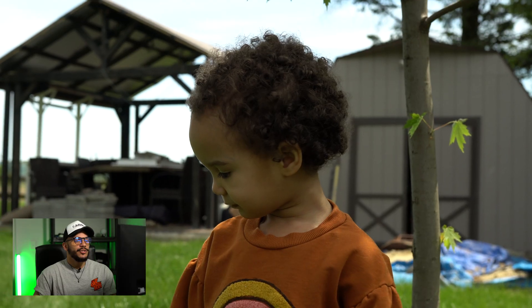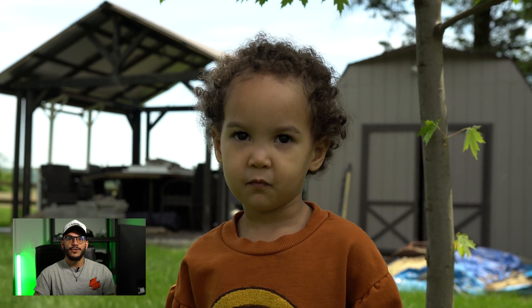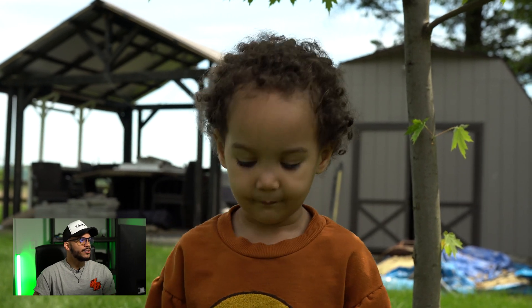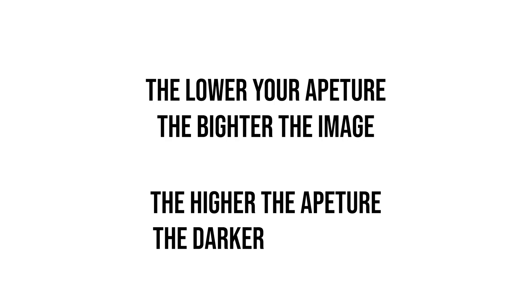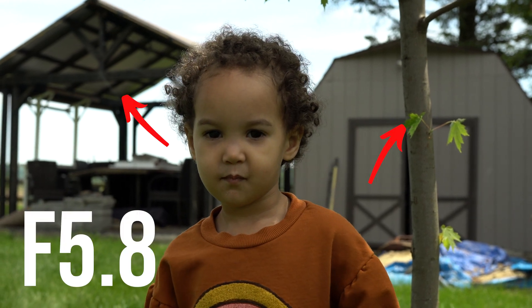Now we have an aperture of 5.8. The image got darker — we have a more closed aperture. As you can see, the tree is now in focus. The barn isn't as focused, but it is not as blurry anymore, and the same with the gazebo. It's not that this looks bad; it's just from a professional standpoint you would want the blurry background so your subject is the only thing in focus. The lower your aperture, the brighter and blurrier the background. The higher your aperture, the darker and more in-focus everything is.